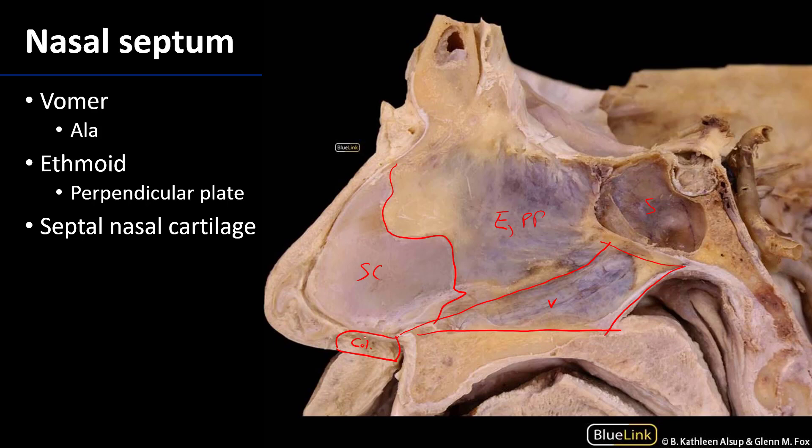So, tripartite partition: the septal cartilage is anterior, and as we move posteriorly we have the perpendicular plate of the ethmoid and the vomer.